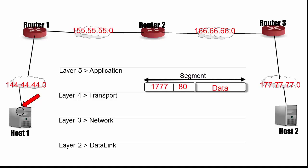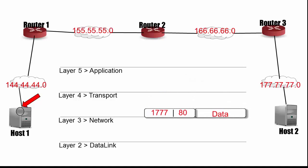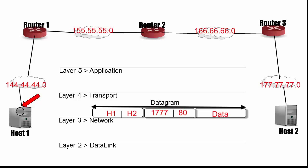That entire segment is sent down to the network layer. At the network layer, a header is added to the segment. This network layer header has a source IP of host 1 and a destination IP of host 2. So the source IP address is 144.44.44.1, and the destination IP address is 177.77.77.1. Note that the network header, together with the segment, is called a datagram.